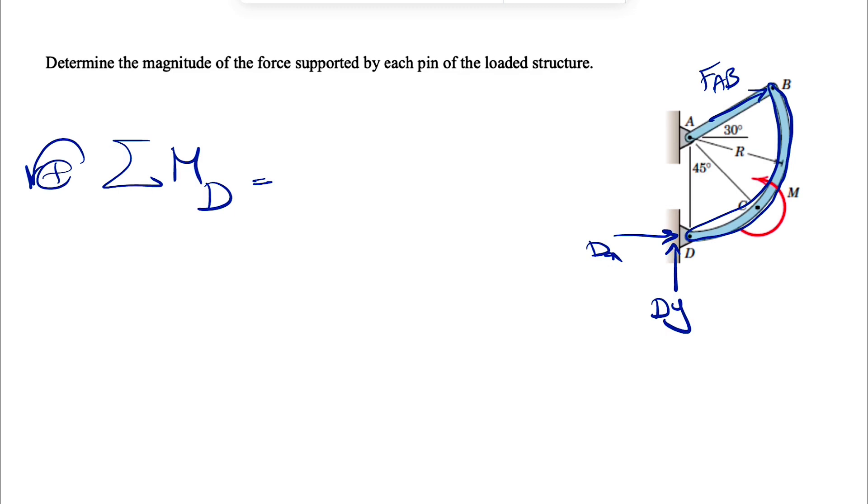For FAB, we're going to have two components. We can either consider our position vector from D to A or D to B. It looks a little easier if we just resolve force FAB at point A. So we'll get two different components, one X, one Y. We go with the same X and Y as the previous question. We can see the Y component is going to pass through D, so no moment from that one. We're going to have the moment of the X component.